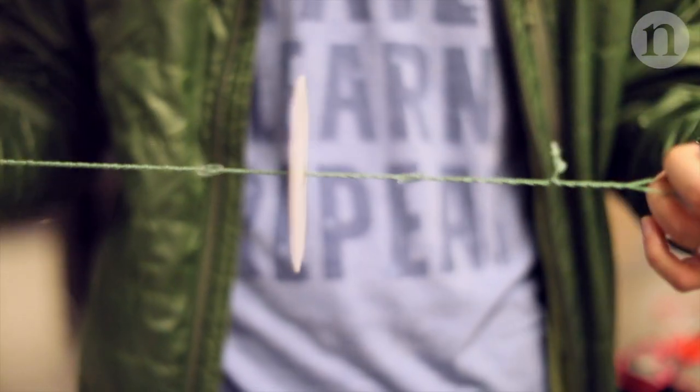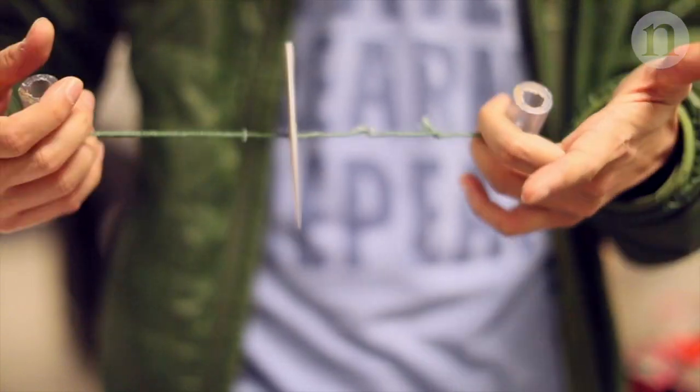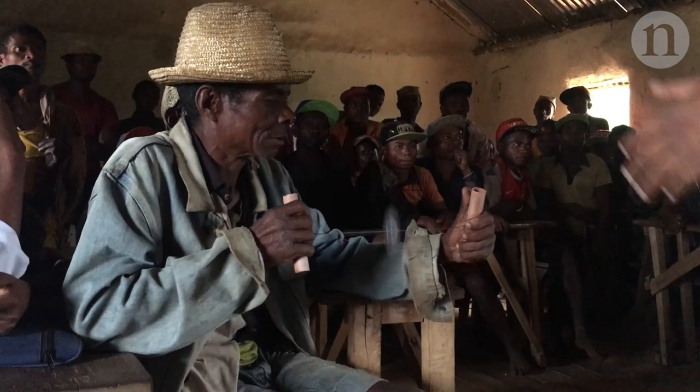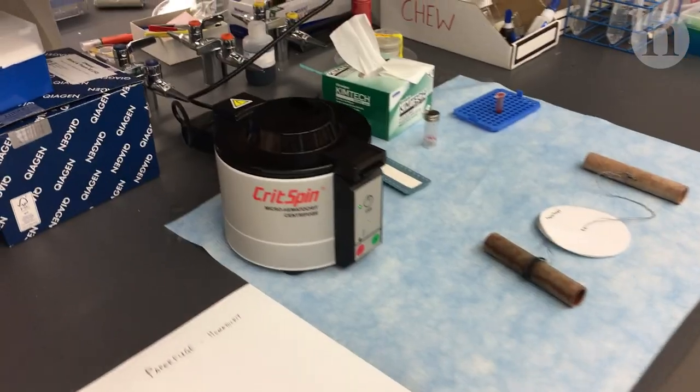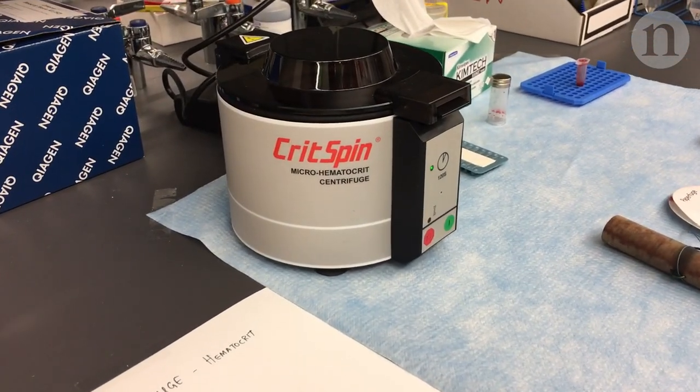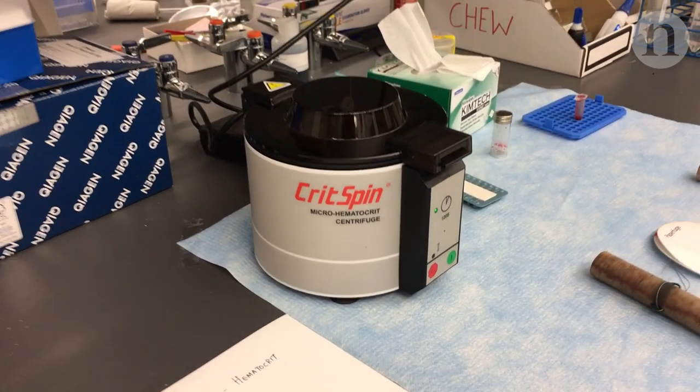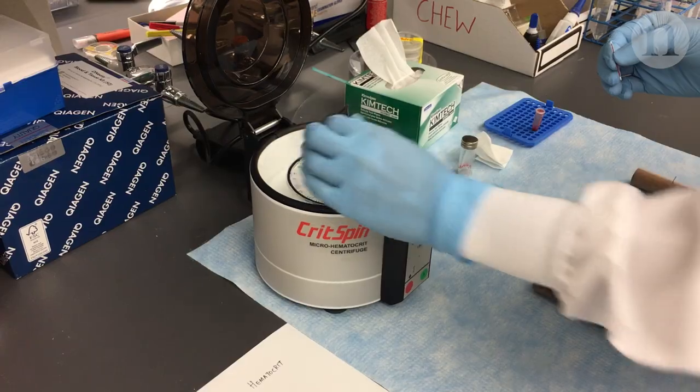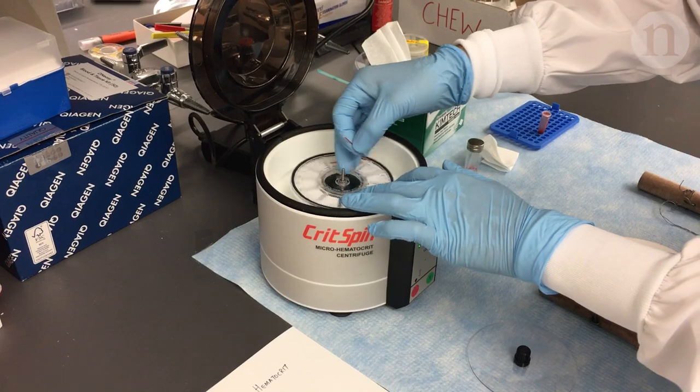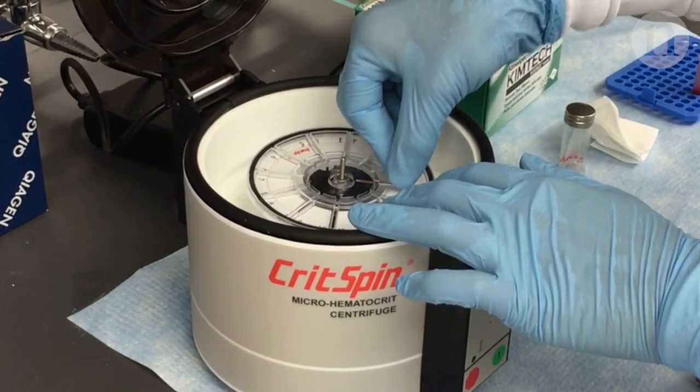Scientists have used paper and string to make a centrifuge that could be used for medical tests in remote locations. The centrifuge is an important part of science labs across the world. In healthcare you need one to separate blood into different parts for further testing. But centrifuges are traditionally bulky and expensive and need to be plugged in.